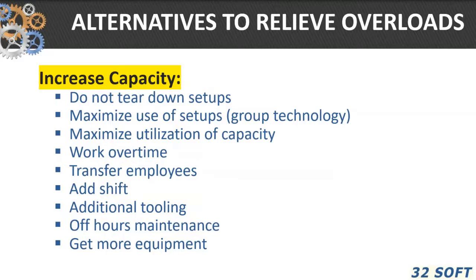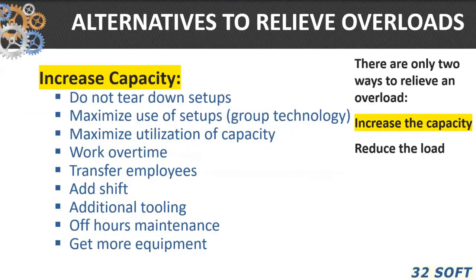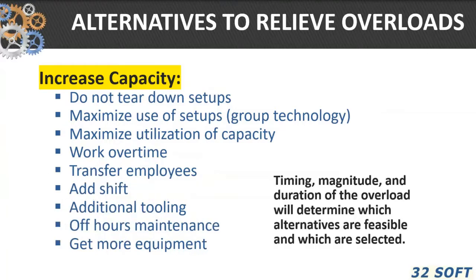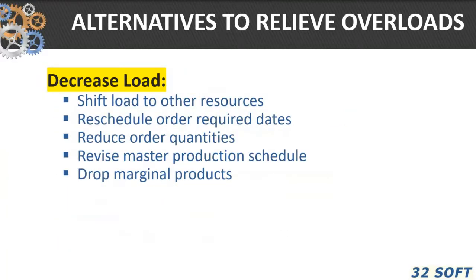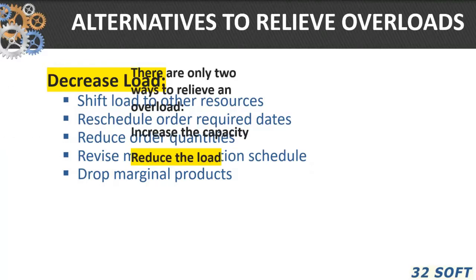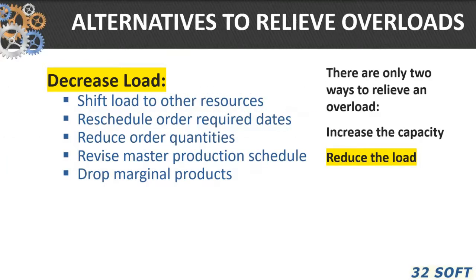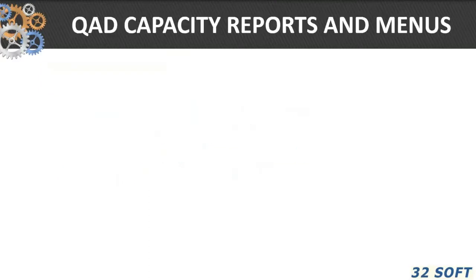There are several alternatives to relieve overloads: increase capacity or decrease capacity, shift loads to other resources, et cetera. These tools can be used to balance load and capacity based on your scheduling and CRP output.